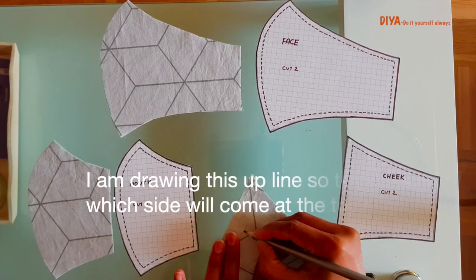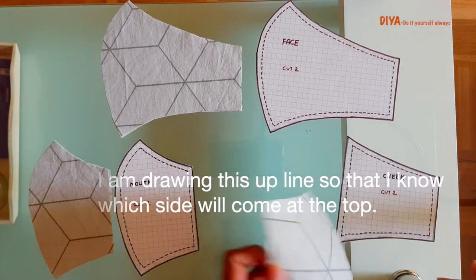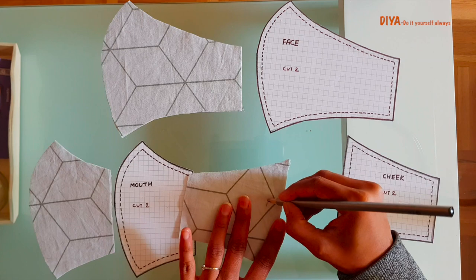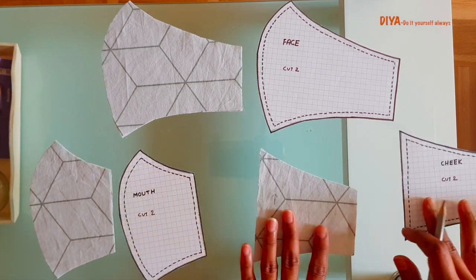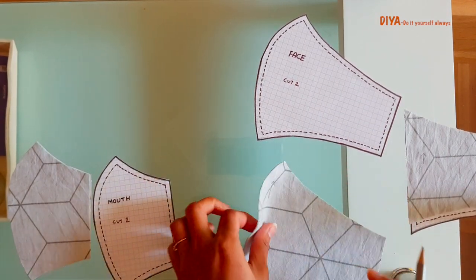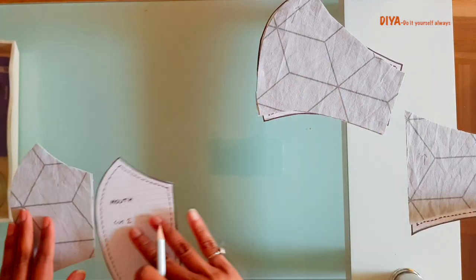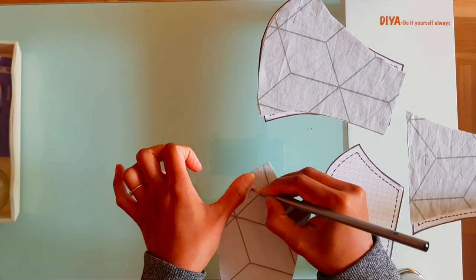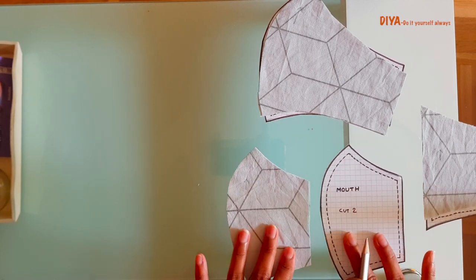Here I'm drawing this up line so that I know which side will come at the top. Make such markings on all the pieces. The reason for all these markings is just that these face and mouth pieces have no spot at the top. When we stitch these pieces we will know that the nose part comes at the top.